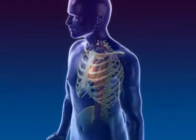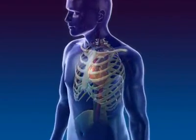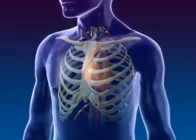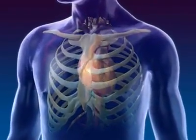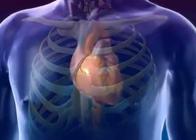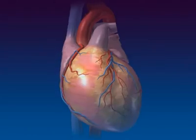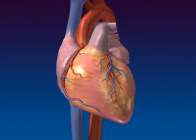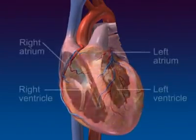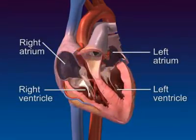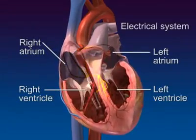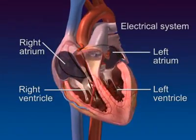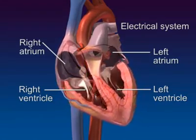The heart generates pressure gradients that drive blood flow through the vascular system. Although the heart appears to be a single structure, it is divided by a central septum into two separate pumps, each consisting of two chambers — the atrium and the ventricle — that alternately contract and empty during systole, then relax and fill during diastole.